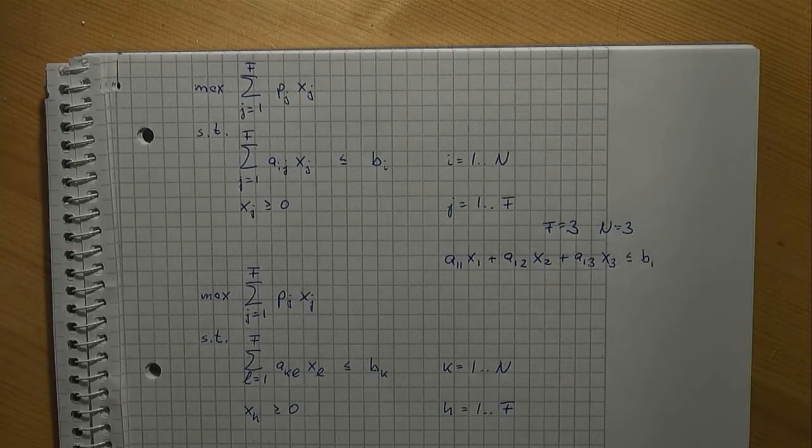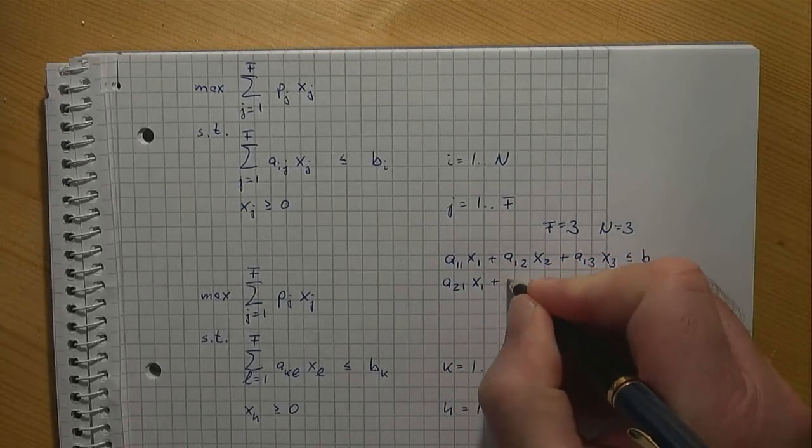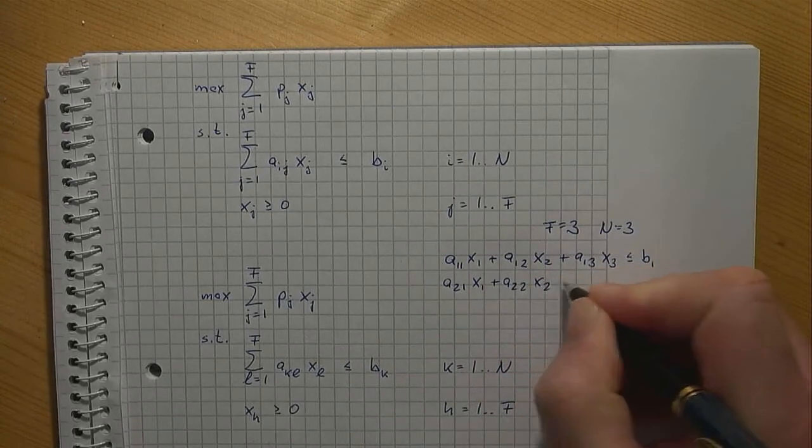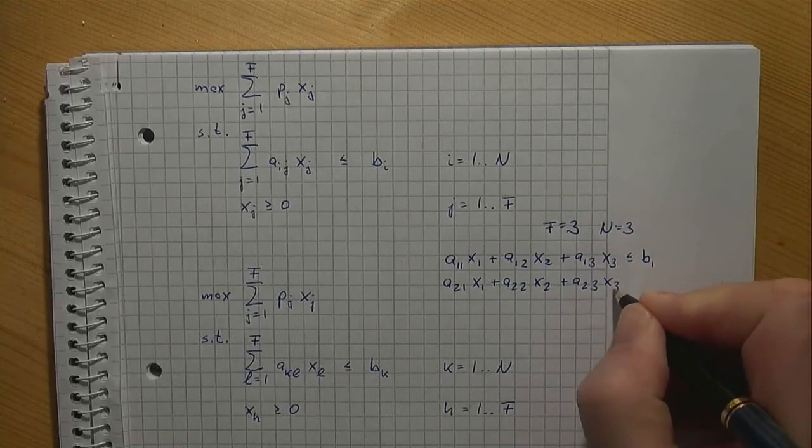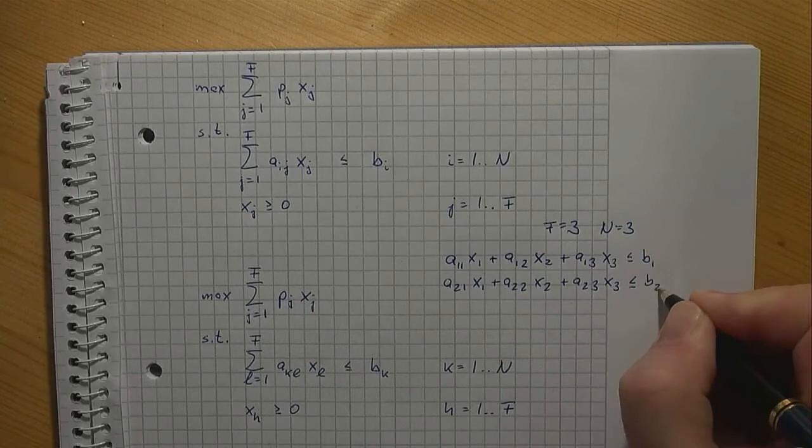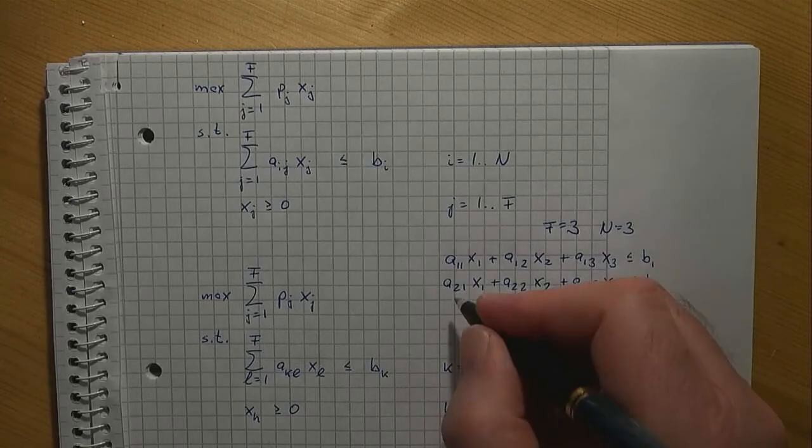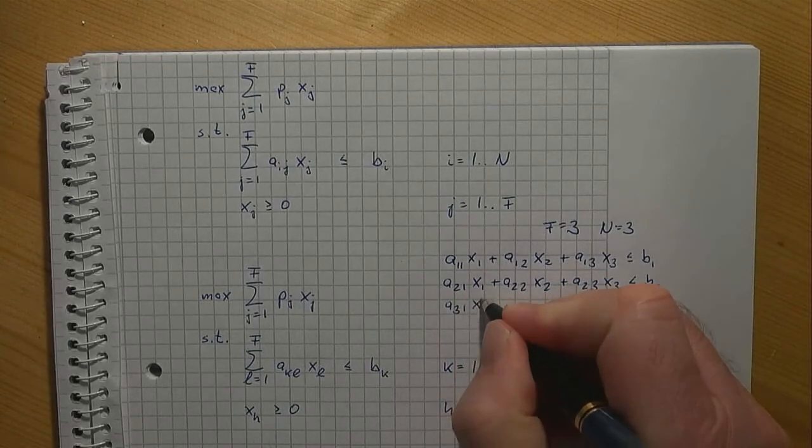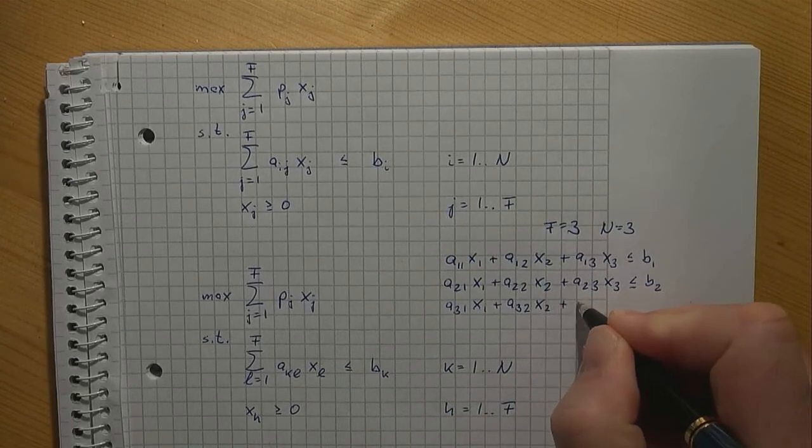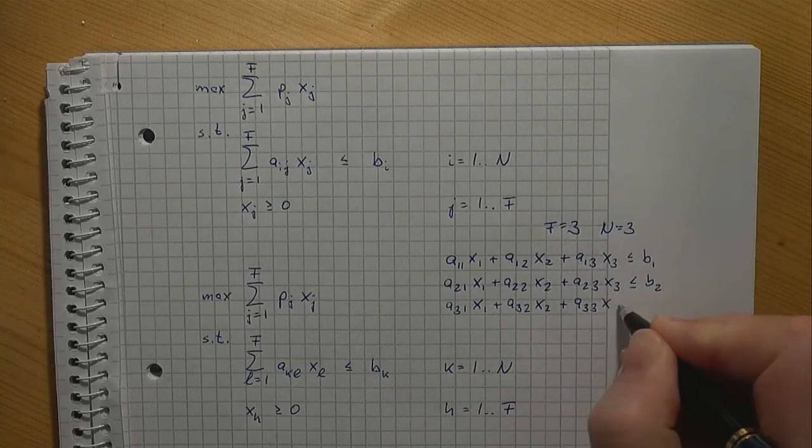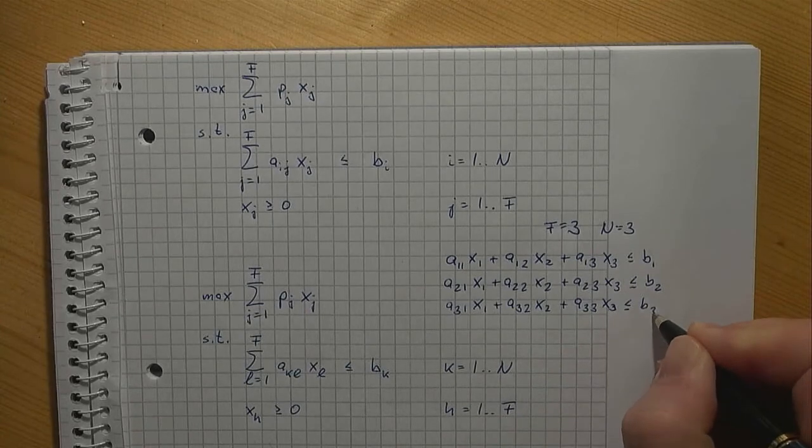For i equals two, a21 x1 plus a22 x2 plus a23 x3 is less than or equal to b2. And for i equals three, a31 x1 plus a32 x2 plus a33 x3 is less than or equal to b3.